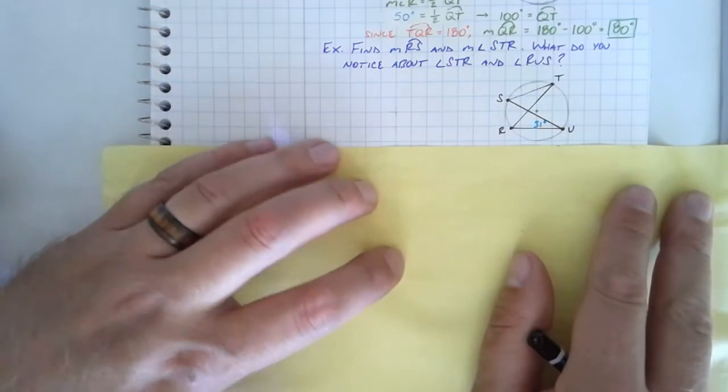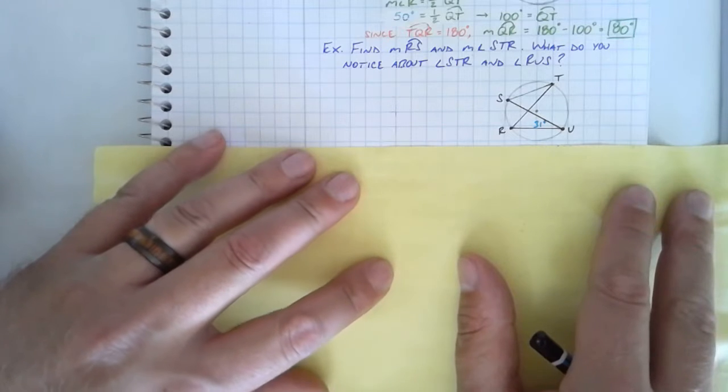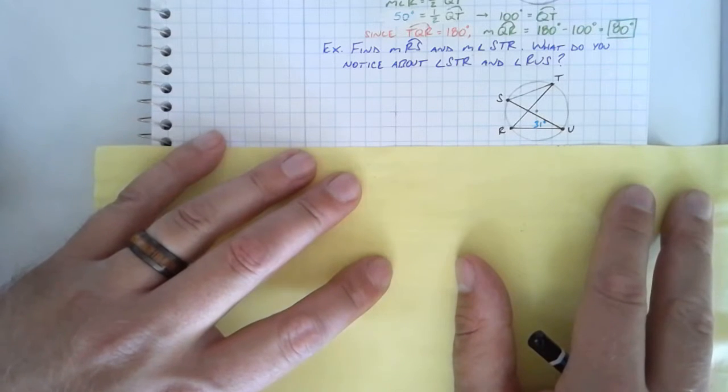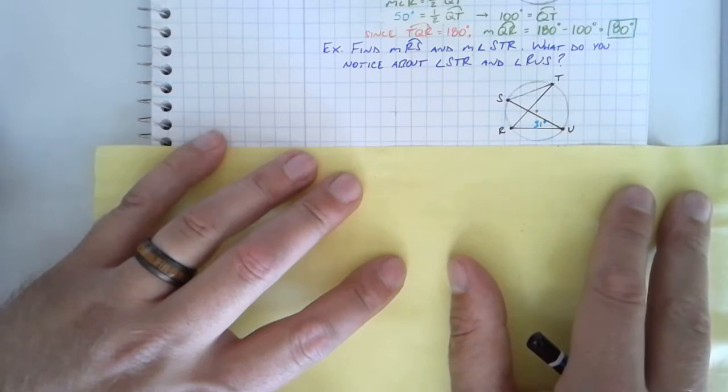And this, the corollary we're going to talk about after working through this example relates to the fact of what happens if I have two inscribed angles that have the same or share the same intercepted arc. And we're going to talk about that in a minute.